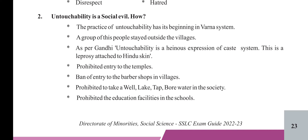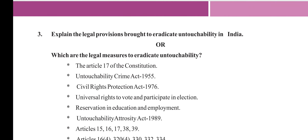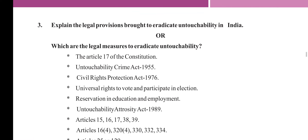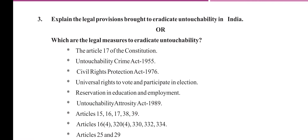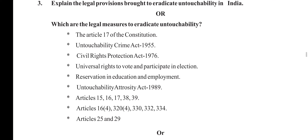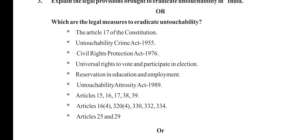Prohibited education facilities in schools. Which are the legal measures to eradicate untouchability in India? Article 17 of the Constitution, Untouchability Crime Act 1955, Civil Rights Protection Act 1976, universal rights to vote and participate in elections, reservation in education and employment, Untouchability Atrocity Act 1989, Articles 15, 16, 17, 38, and 39; Articles 16(4), 320(4), 330, 332, 334; and Articles 25 and 29.